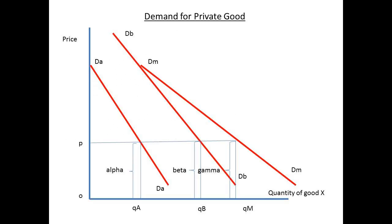Consider the demand for a private good. The demand curve DADA is shown for individual A for good X, and for individual B the curve is DBDB. At price OP, the demand by A is QA, for B it is QB, and so the total market demand at this price is QM.